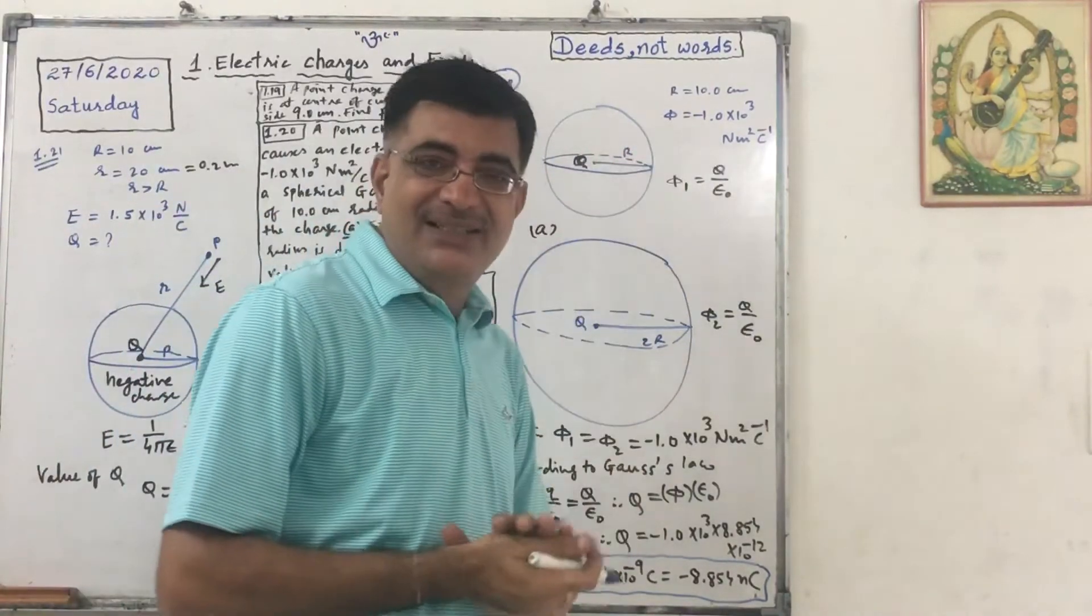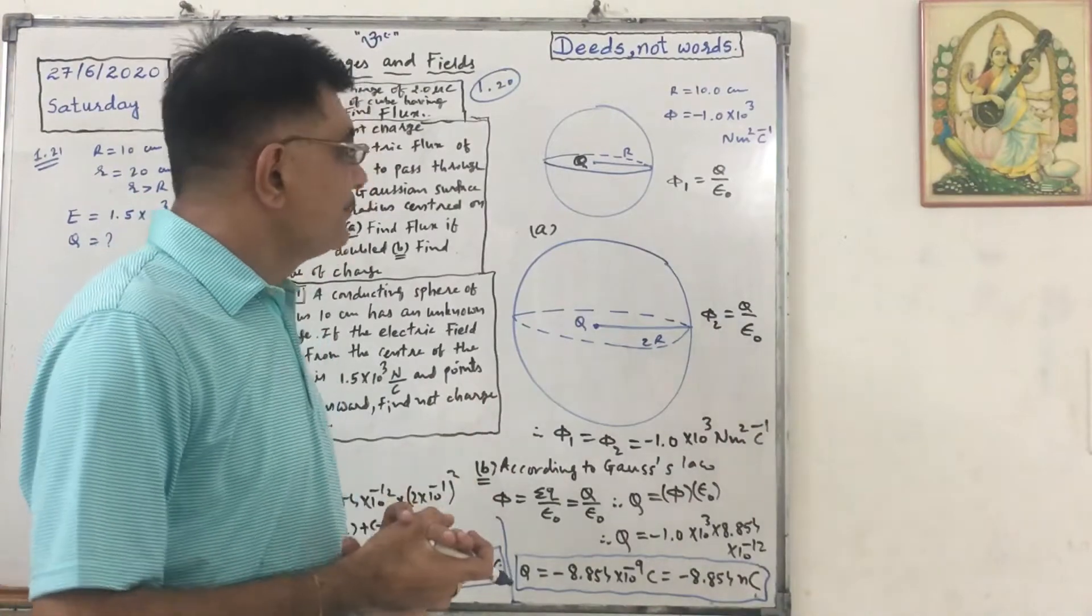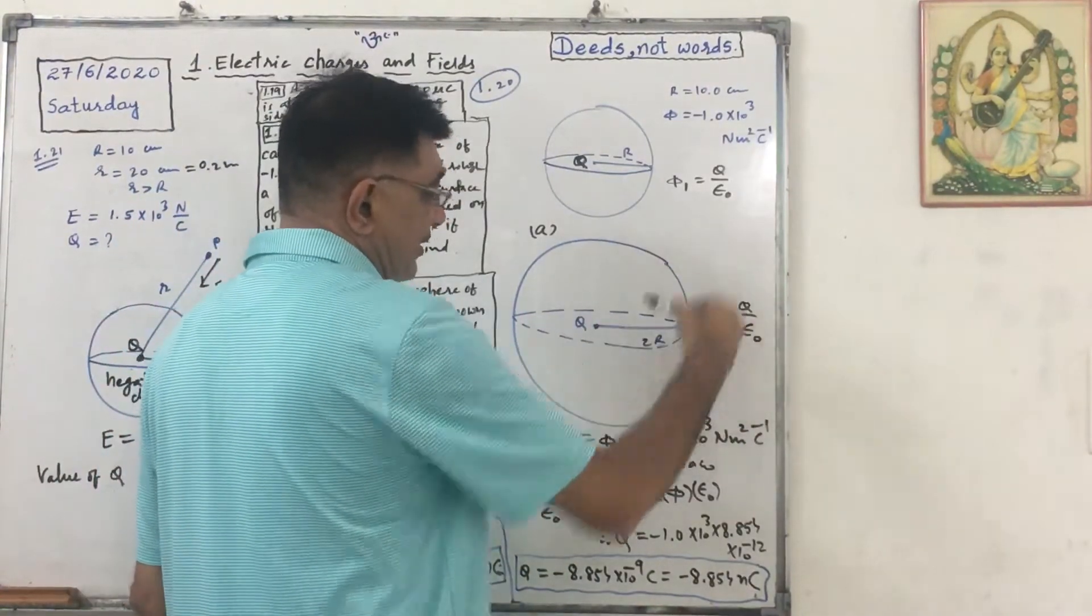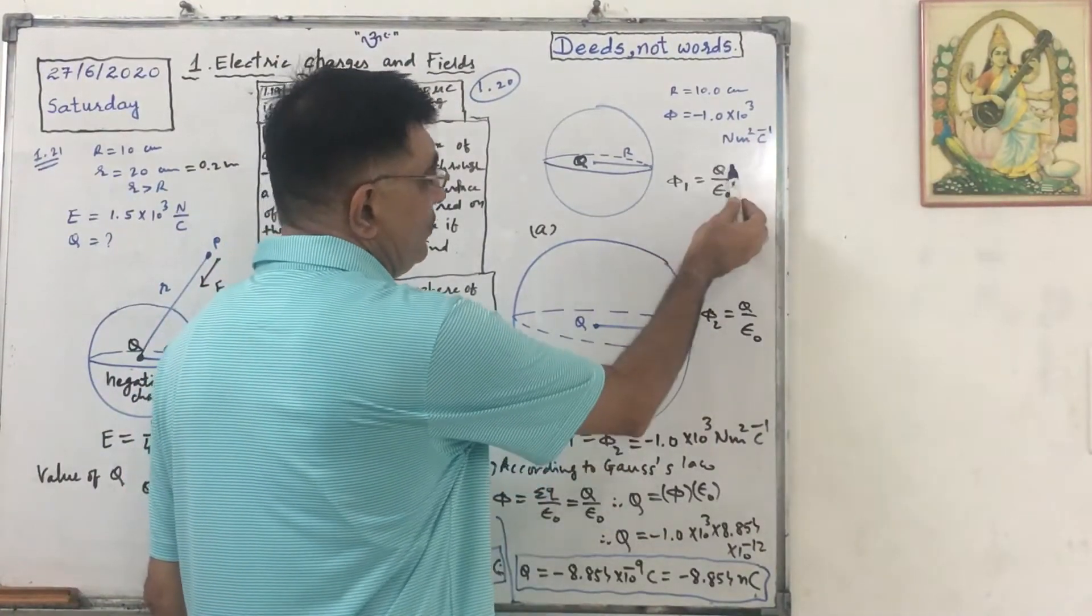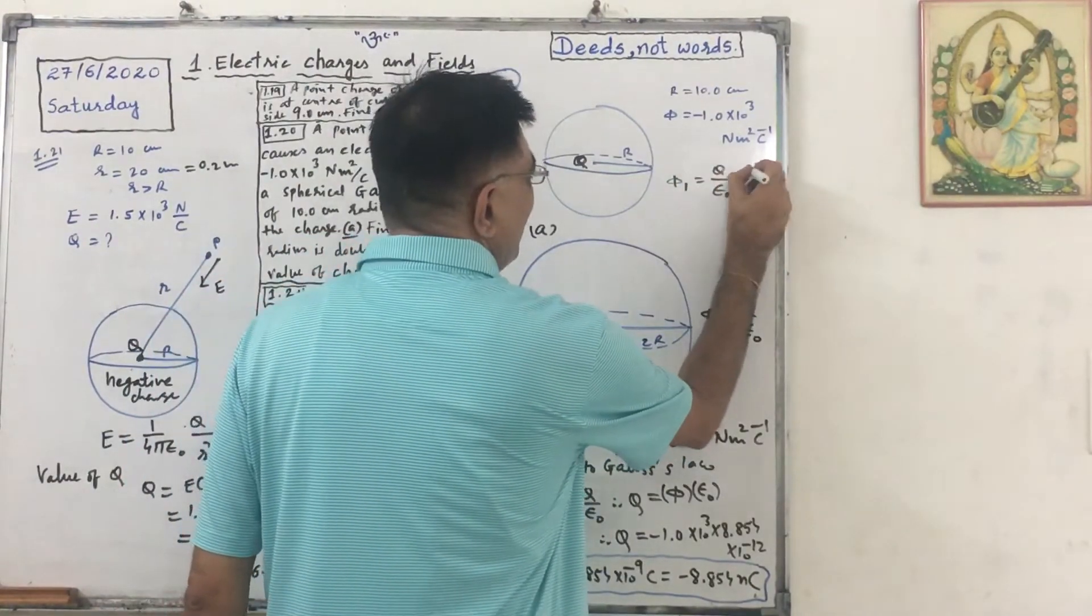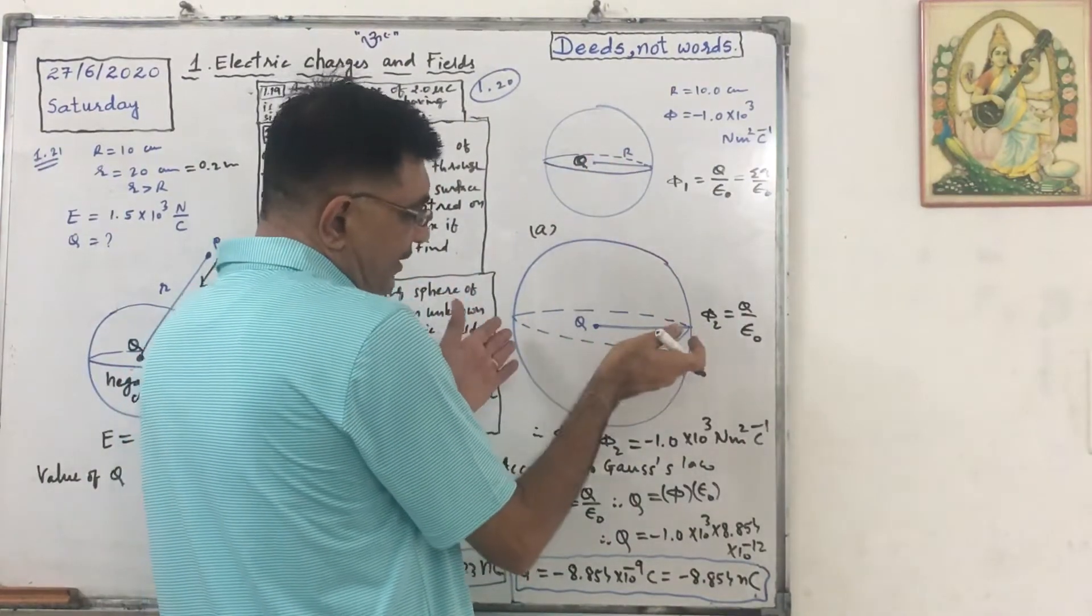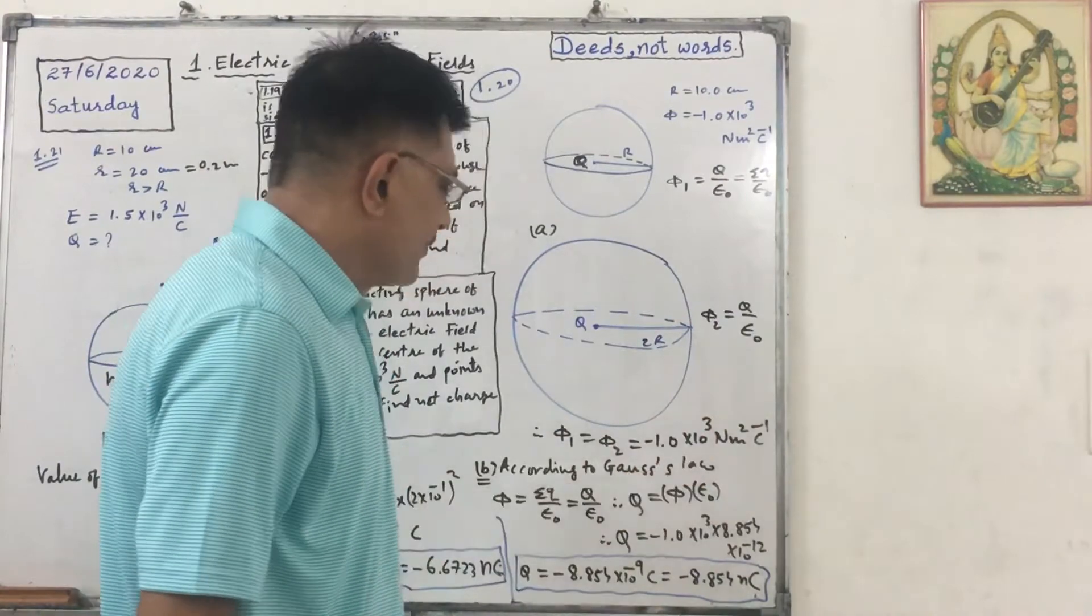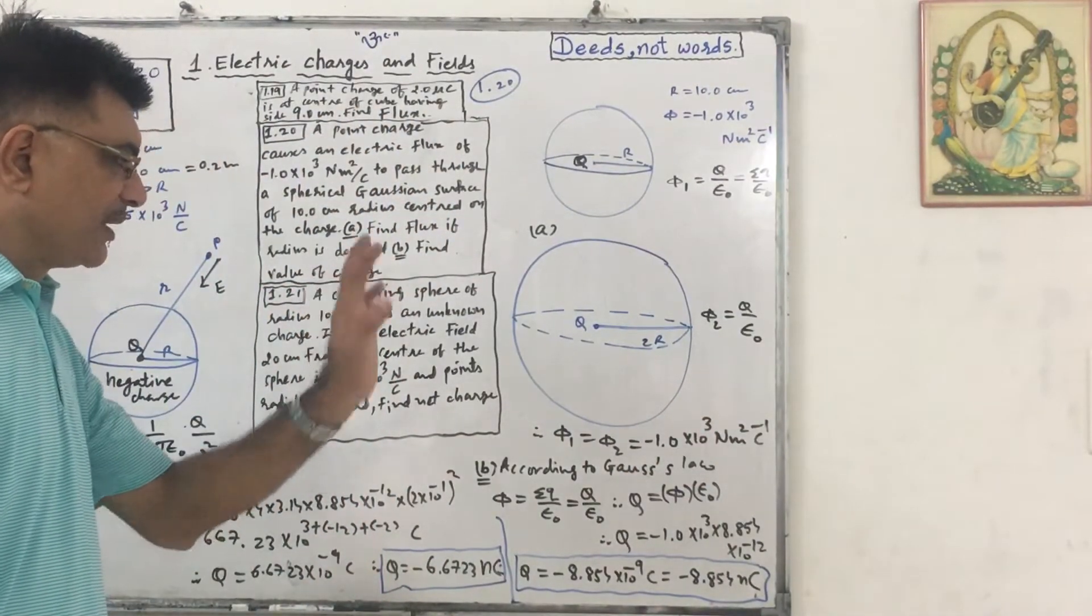Here flux is negative, so obviously charge will be negative. First, if we double the radius what will happen? According to Gauss's law flux equals sigma q upon epsilon not, here sigma q equals q. So if I double the radius, the q remains same. So flux remains same: minus 1.0 into 10 raised to 3 Newton meter square per Coulomb.